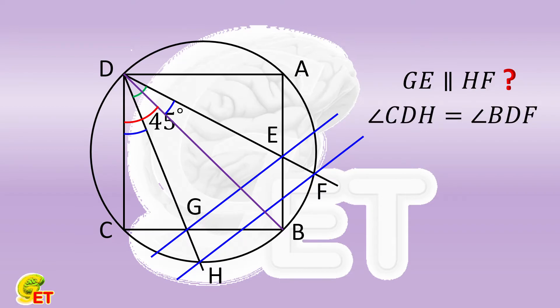Next we obviously need to find some similar triangles. Now we already have a pair of equal angles, so we just need to find another pair of equal angles. We know that angle ABD is also 45 degrees.